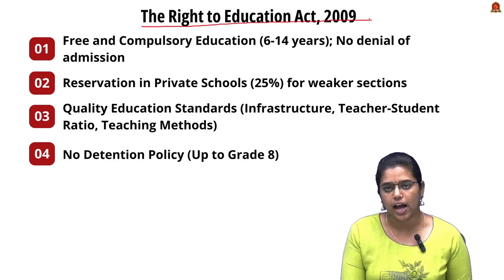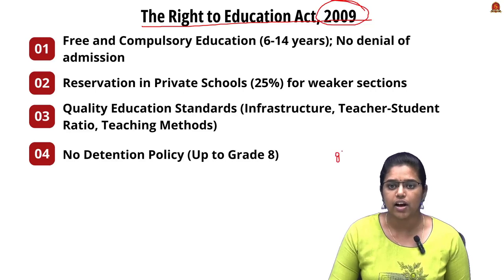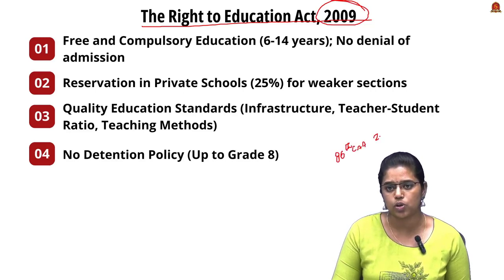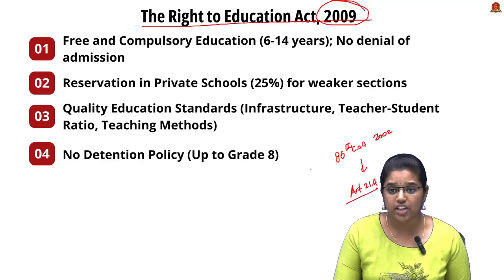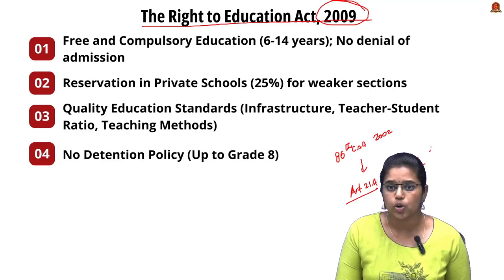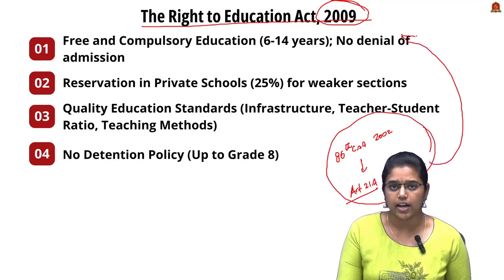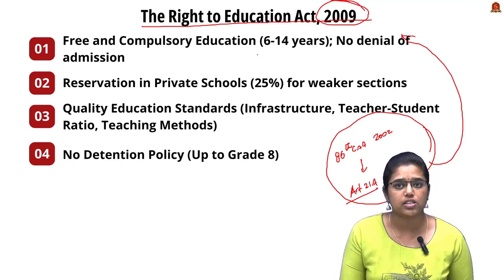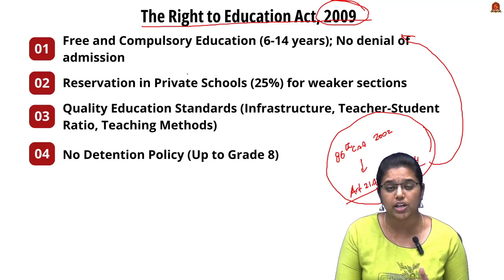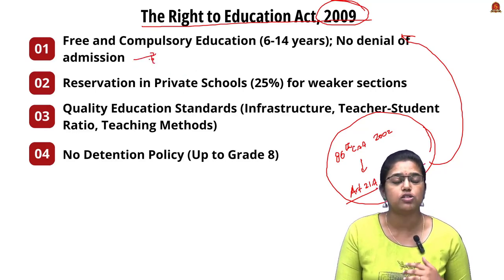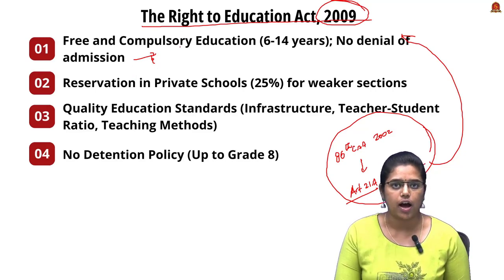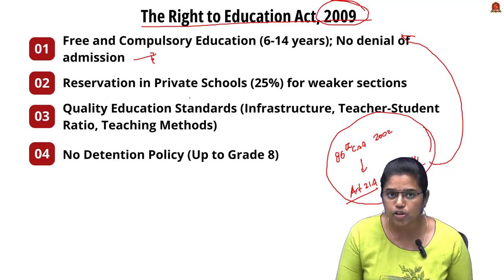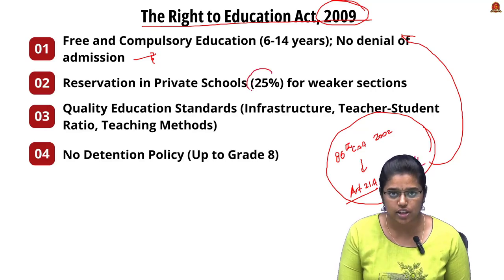The Right to Education Act was enacted in 2009. The 86th Constitutional Amendment of 2002 introduced Article 21A, which provides free and compulsory education to children in the age group of 6 to 14 years. This act was enacted to implement Article 21A. It also states that children cannot be denied admission based on prior grades or lack of particular documents. Another provision requires private schools to reserve 25% of seats for the weaker sections of society.